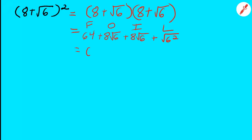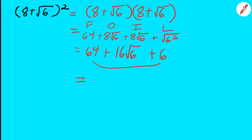So we're going to have 64, plus 8 square roots of 6, plus another 8 square roots of 6 — that's 16 square roots of 6 — plus the square root of 6 squared is 6. Now 64 and 6 can be added: 64 plus 6 is 70. So our answer is 70 plus 16 times the square root of 6. These are two different terms; they can't be added beyond that.